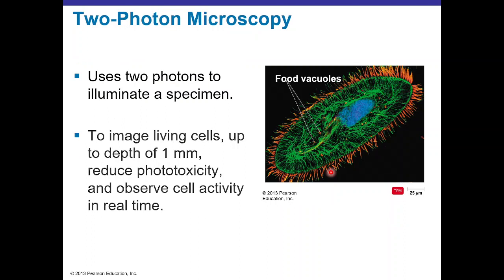Two-photon microscopy uses two photons or two sources of light to illuminate a specimen, giving much better detail than confocal microscopy. It can image at certain levels within the specimen and achieve depths up to one millimeter. It reduces phototoxicity caused by photons that can damage cells, and allows viewing of cells in real time — for example, observing the transport of food vacuoles along the cytoplasm of paramecium.